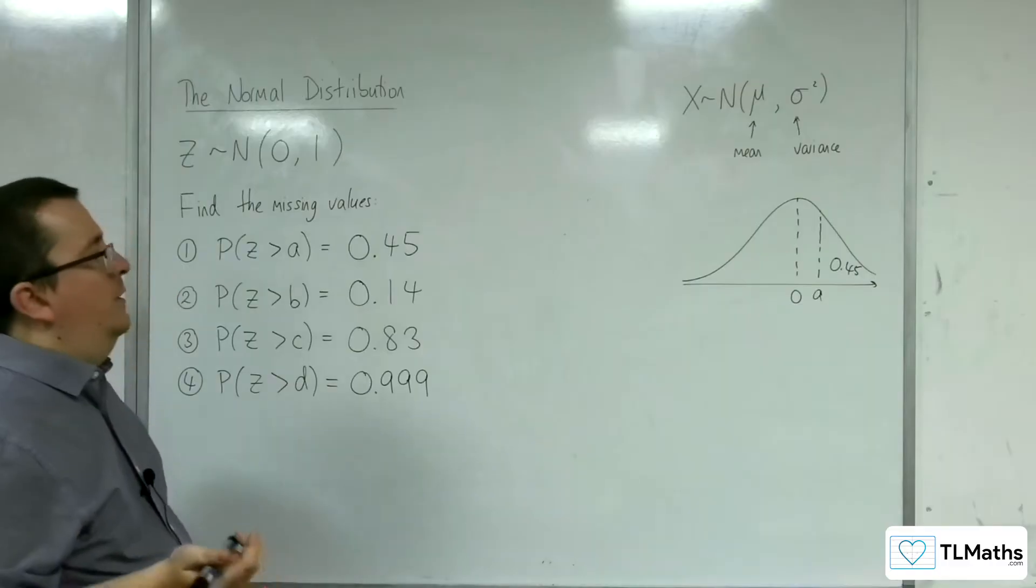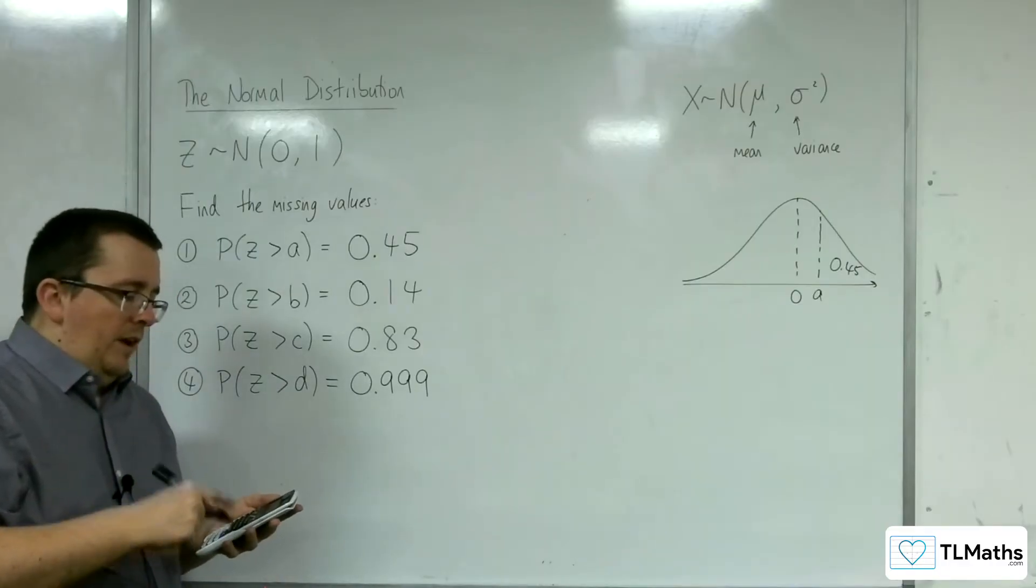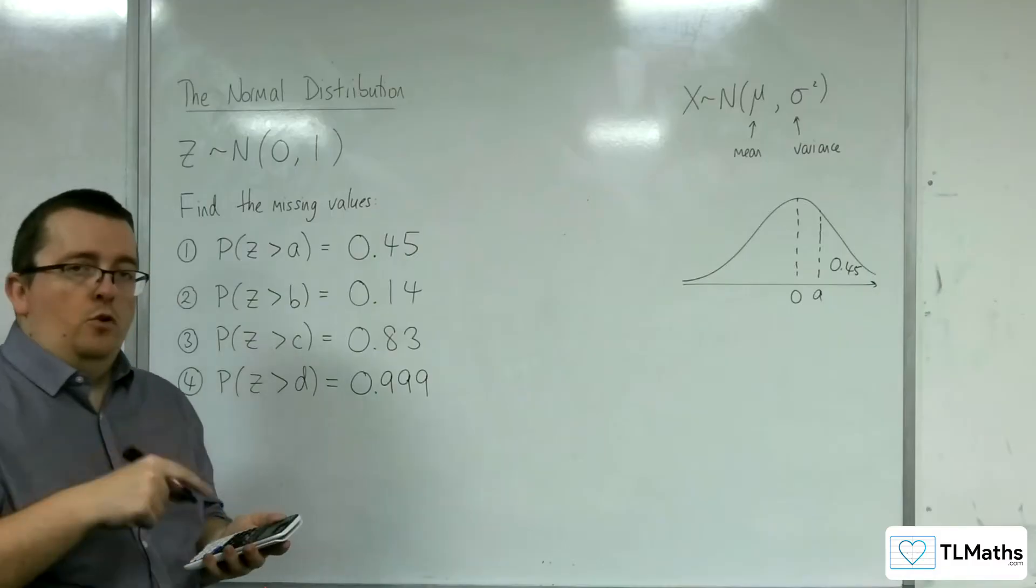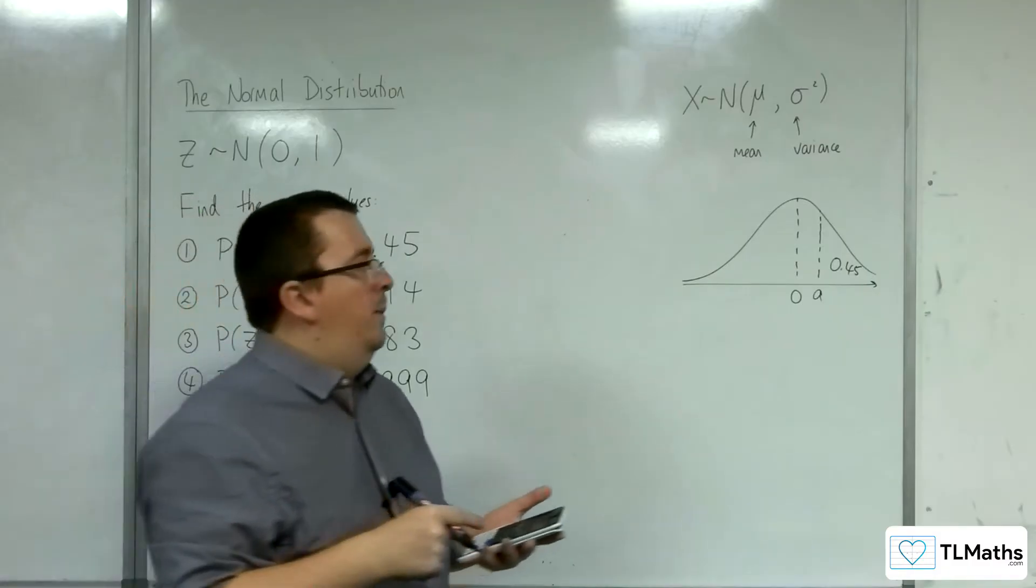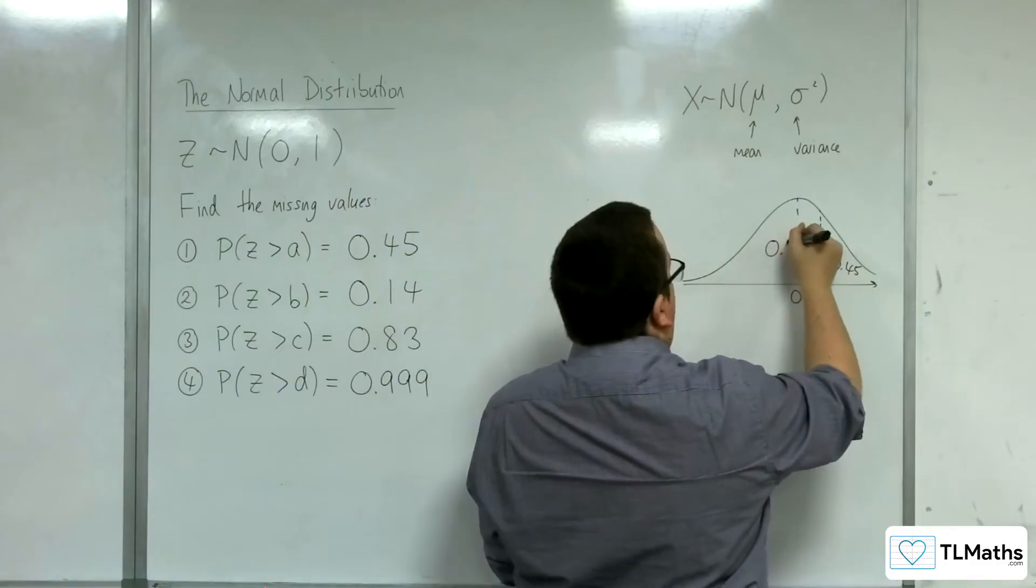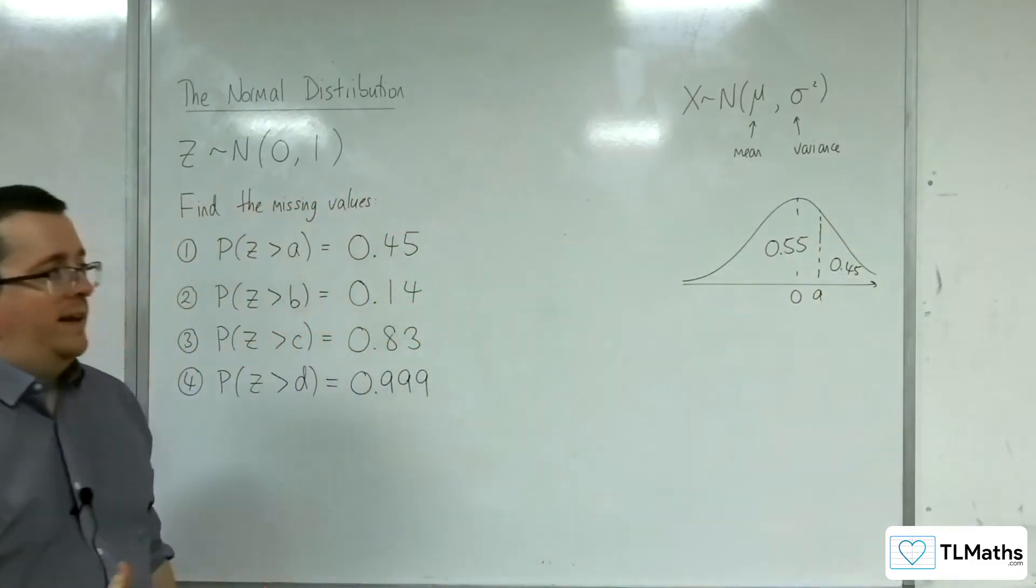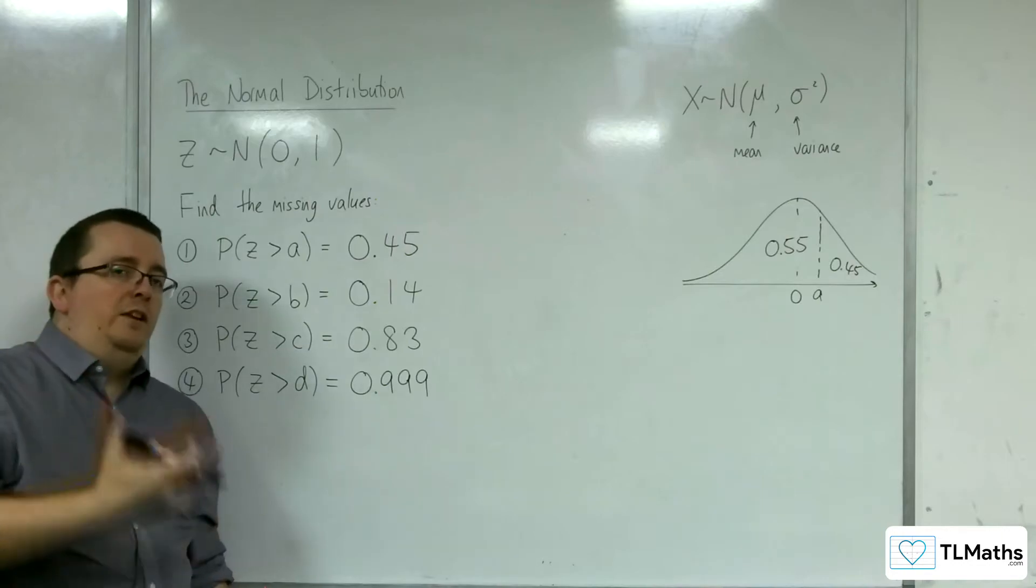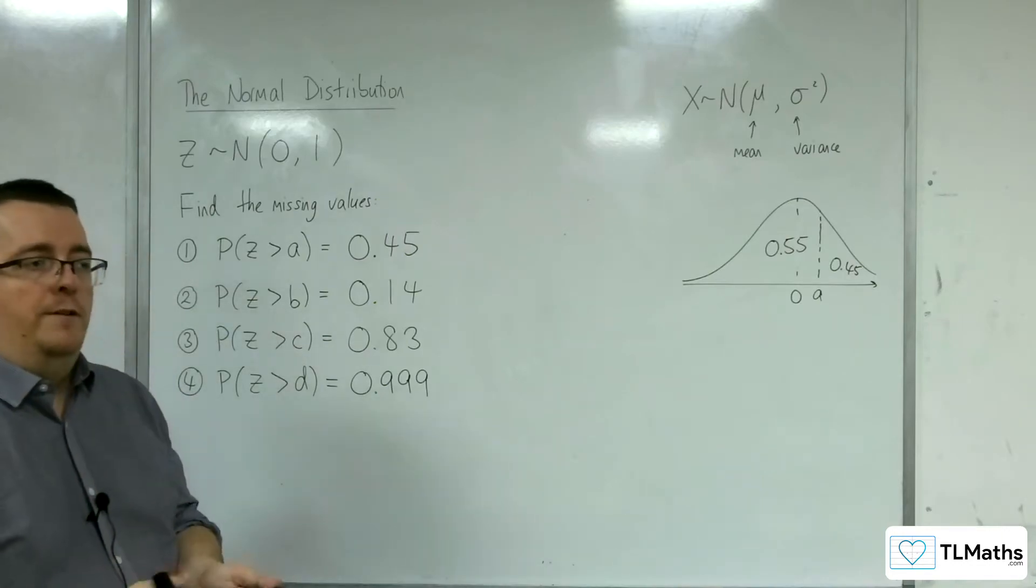On my calculator, I can't type in 0.45 to solve this problem. Instead, I need to consider the left region, which is 0.55. The calculator only looks at the left-hand side for the area.